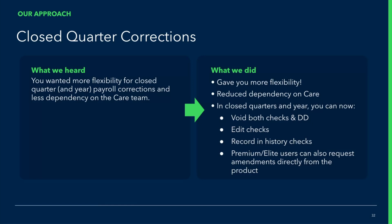How did we do it? Well, now in closed quarters and year-end, you can void both checks and direct deposit, edit checks, and record checks in history. For premium and elite QuickBooks Online users, you can also request amendments directly from the product.